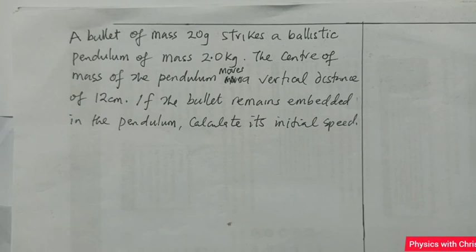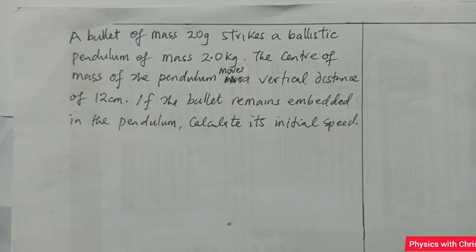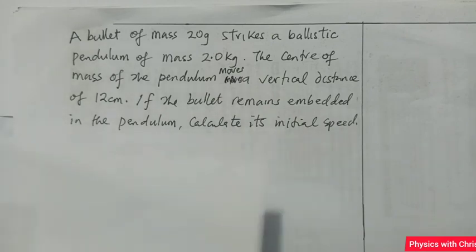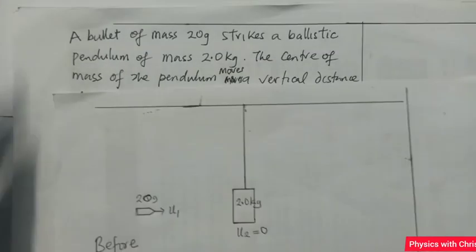The ballistic pendulum has a mass of 2 kg. The center of mass of the pendulum moves a vertical distance of 12 cm. Now, if the bullet remains embedded — that is, after the bullet struck the ballistic pendulum it became embedded in the pendulum — we are to calculate the initial speed of the bullet. I'm going to show you a picture that goes with this question on my paper here.